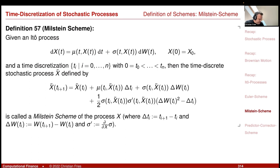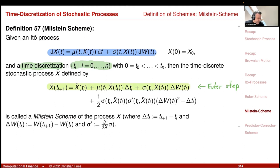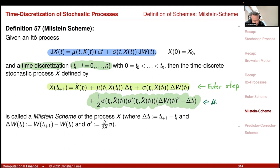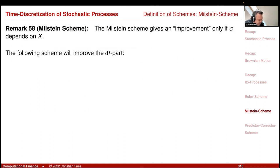The Milstein scheme only gives an improvement if σ depends on x — it only operates on the σ dW part. The following scheme now looks at the dt part. Recall that in the Euler scheme the dt part is approximated by taking the value at the starting time point and multiplying by the time step. If you think of classical integration rules, that's just the rectangle rule: you look up the starting value and draw a small rectangle.